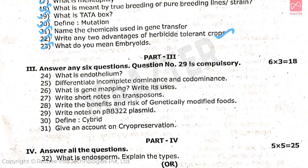Part 3 is a total of 8 questions. Each question carries 3 marks, totally 18 marks. Question number 29 is a compulsory question — write notes on pBR322 plasmids.